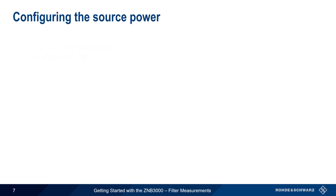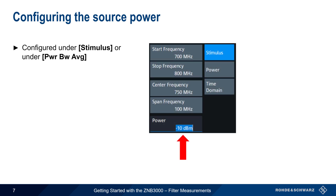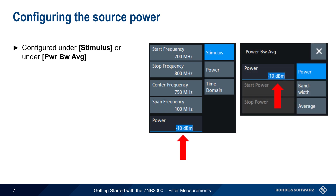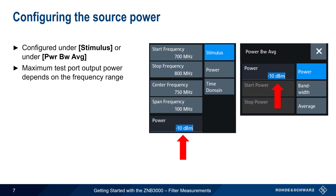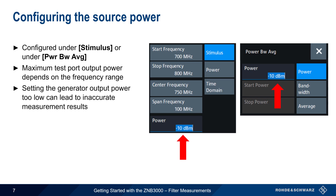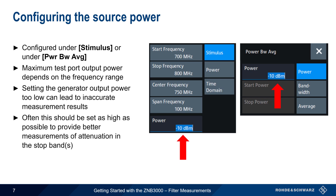The source power delivered to the filter input is configured either under the Stimulus tab, or it can be configured using the Power Bandwidth Average button. On the ZMB3000, the maximum source power depends on the selected frequency range. It's important to keep in mind that setting the generator output power too low can lead to inaccurate measurement results. When measuring filters, source power often should be set as high as possible to enable more accurate measurements of attenuation or rejection within the stopband.